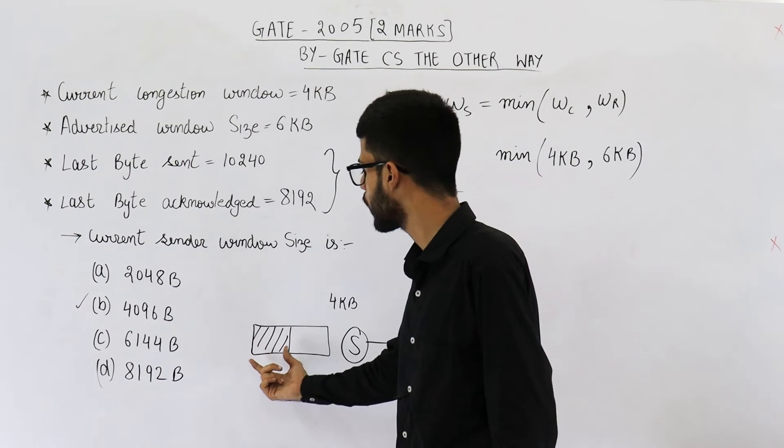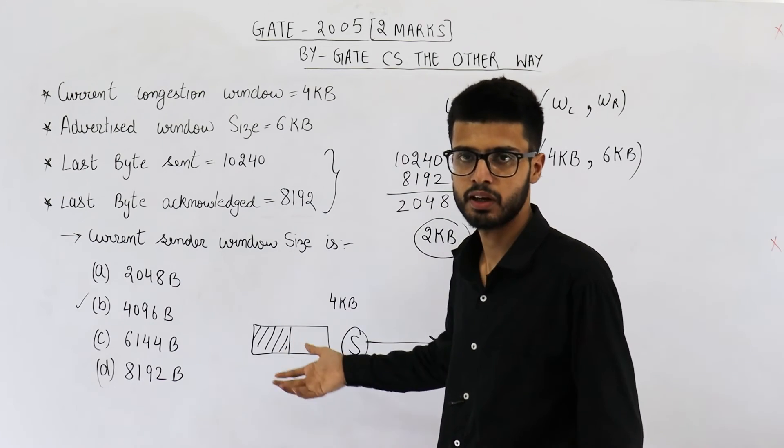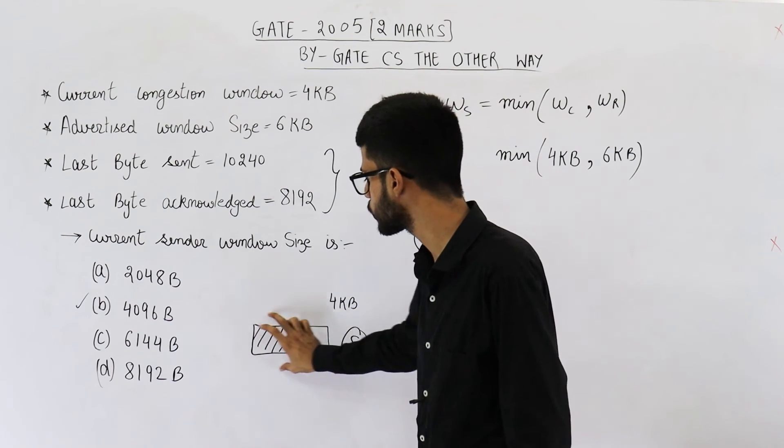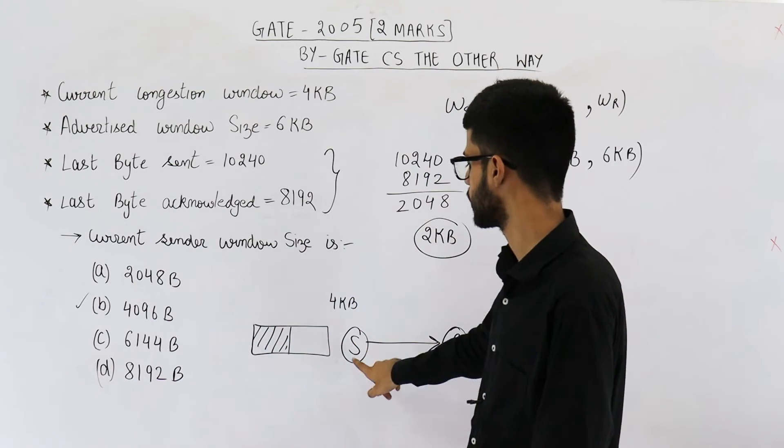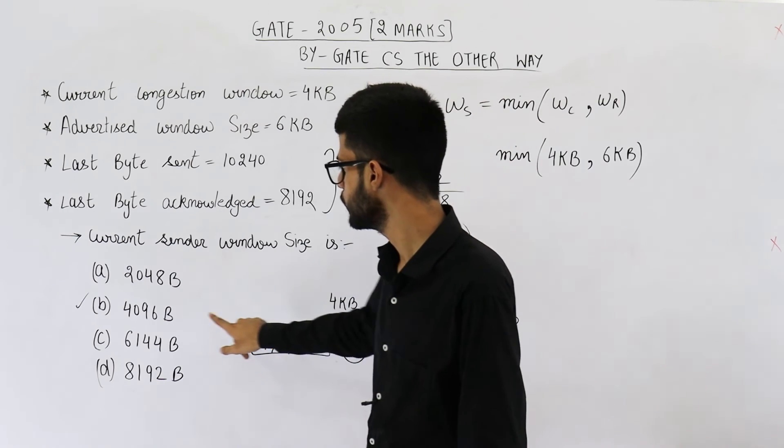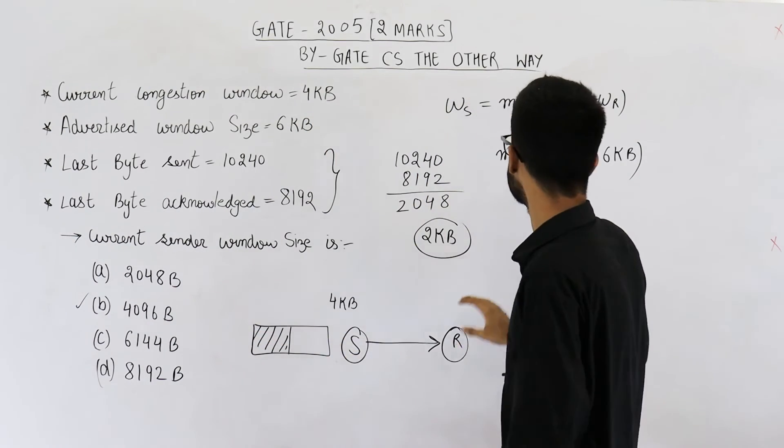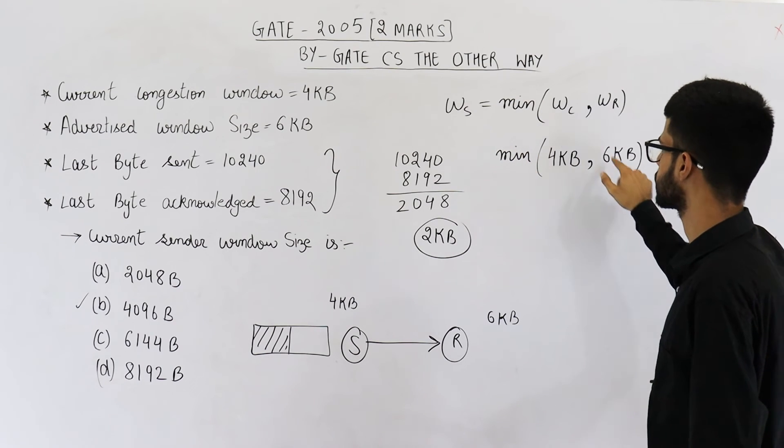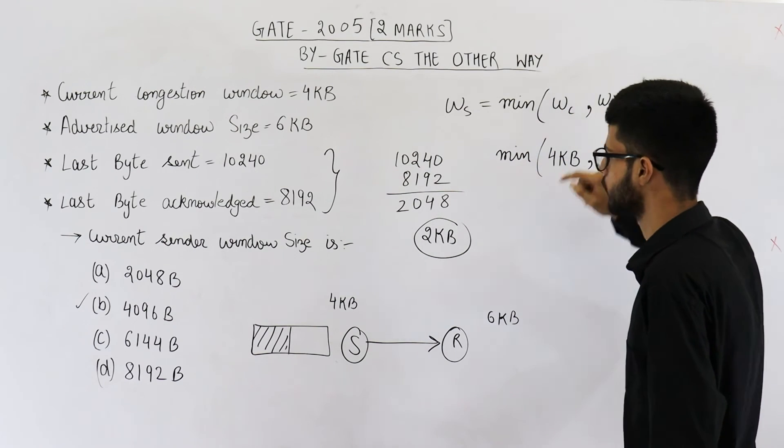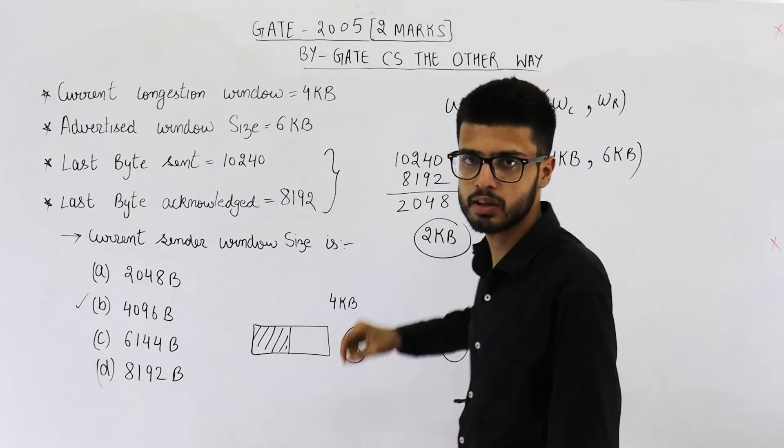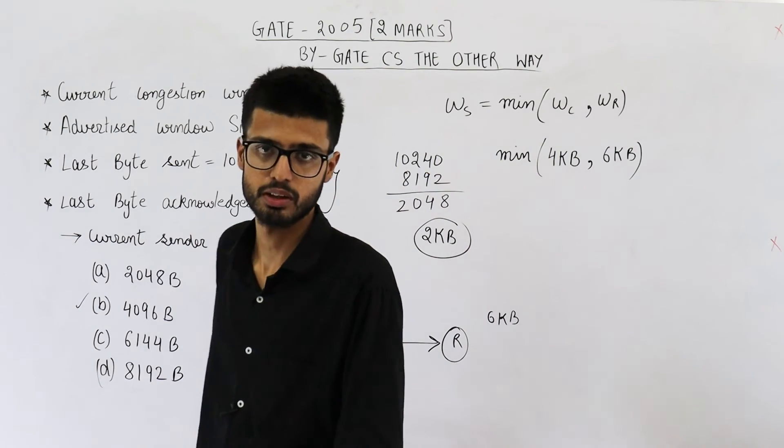But they are not asking about how much is empty or how much is filled. They are simply asking what is the total window size at sender. So it will be 4 KB, 4096 bytes. You actually don't need to do all this stuff. Simply take minimum of 4 and 6, that is congestion window and receiver window. You will get 4 KB as your answer. Thank you very much for watching this one.